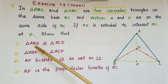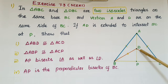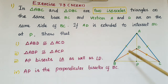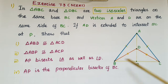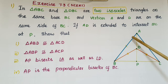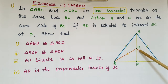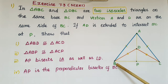...we have to show: first, triangle ABD is congruent to triangle ACD; second, triangle ABP is congruent to triangle ACP; third, AP bisects angle A as well as angle D; and fourth, AP is the perpendicular bisector of BC.